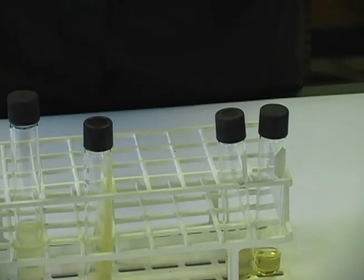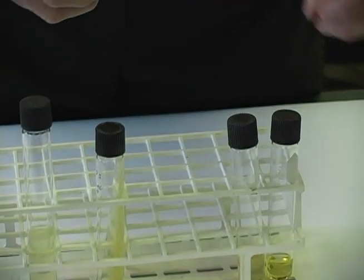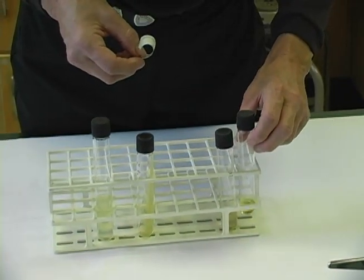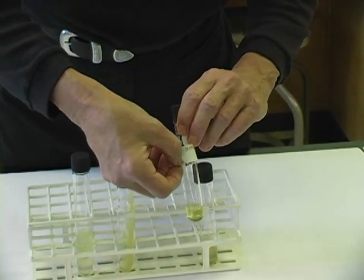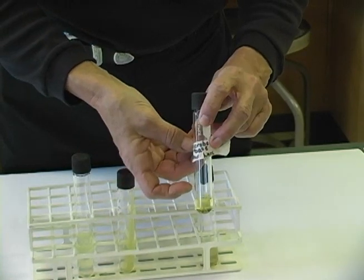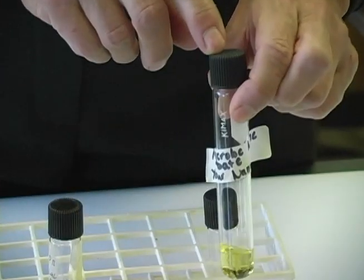When placing labels on broth tubes, the label always goes on the part of the tube in which the microbes are growing, in this case on the glass body. Labels do not go on caps.